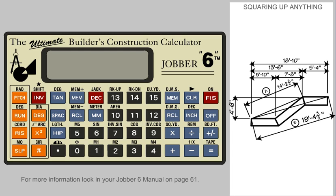With the Jobber and any two dimensions, you can check any project for being square in a matter of seconds and know it is correct, even odd-shaped items as illustrated with this stringer using the triangle keys.